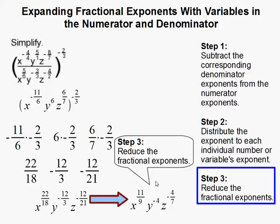So 22 over 18 is also 11 over 9. Negative 12 over 3 is also negative 4. Negative 12 over 21 is also negative 4 over 7.